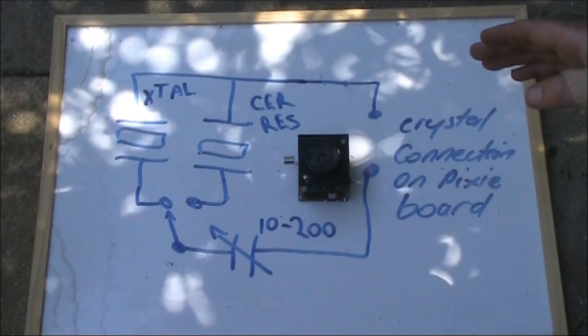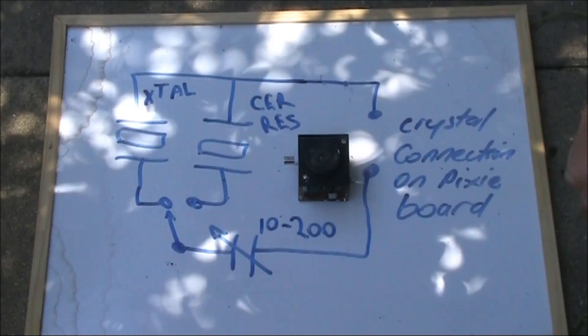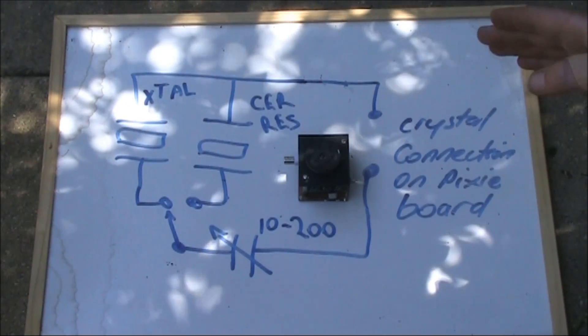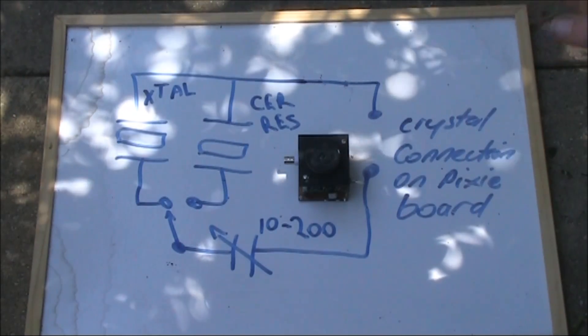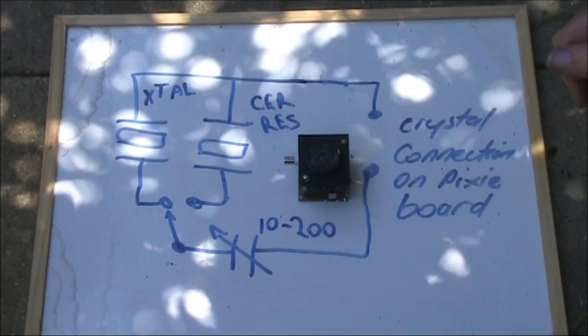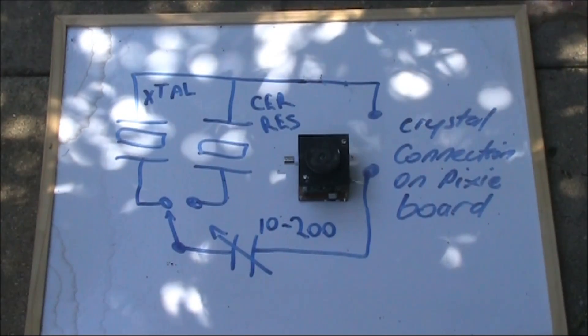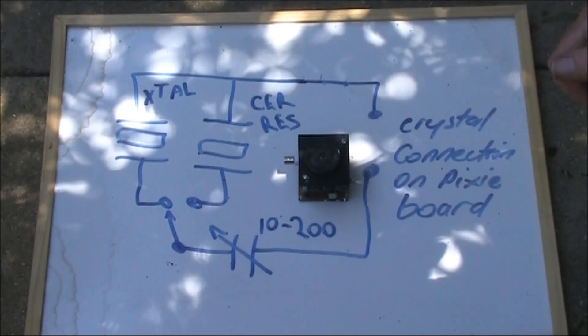When I took the crystal out, that signal disappeared. That indicated that there was some interaction. There is a very small amount of capacitance within the switch that was causing the crystal to operate. And that was taking over from the ceramic resonator, which didn't seem to be doing anything.